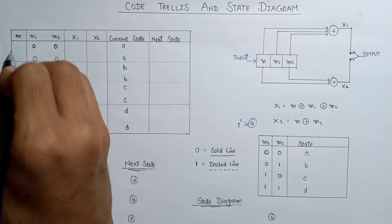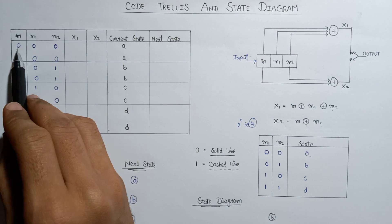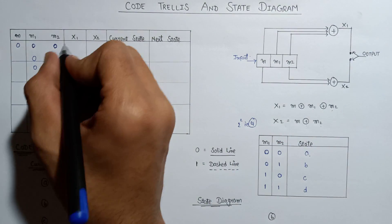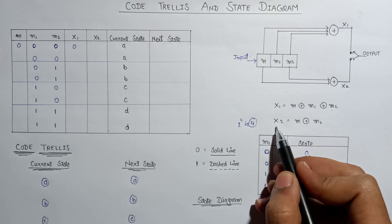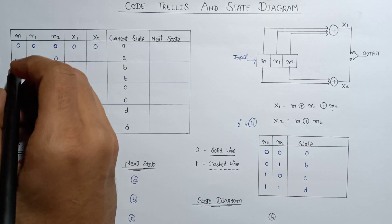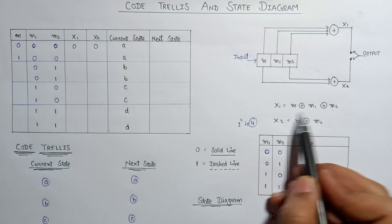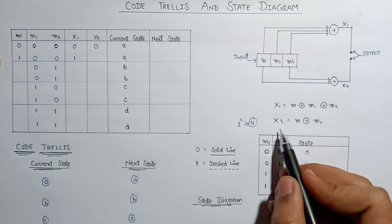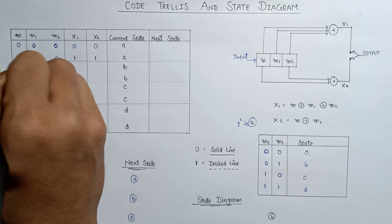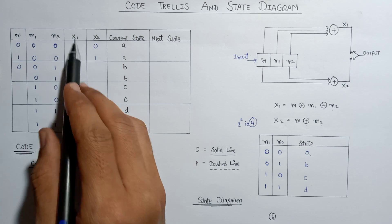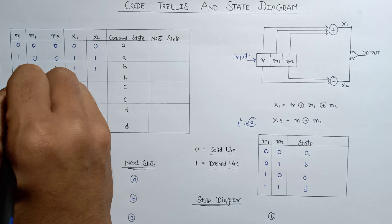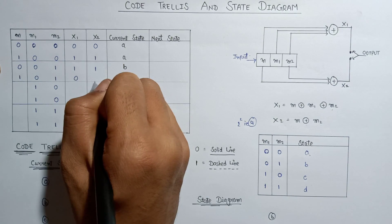Now let us take a scenario in which the current message bit m is 0. If m is 0, the value of x1 based on m XOR m1 XOR m2 will be 0, and the value of x2 will also be 0. If m is 1, the value of x1 will be 1 and x2 will be 1. If m is 0 again, x1 would be 1 and x2 would be 1. If m is 1, the value of x1 is 0 and x2 is 0.